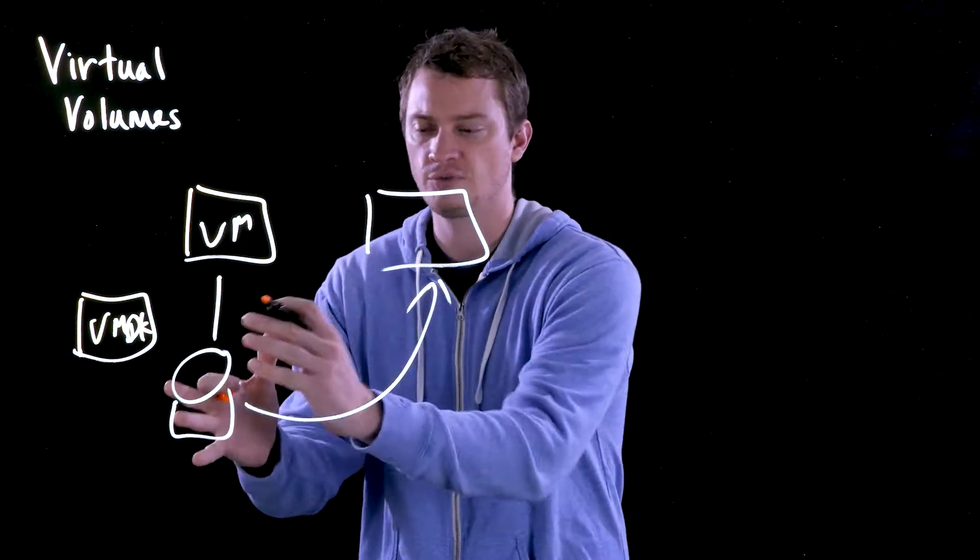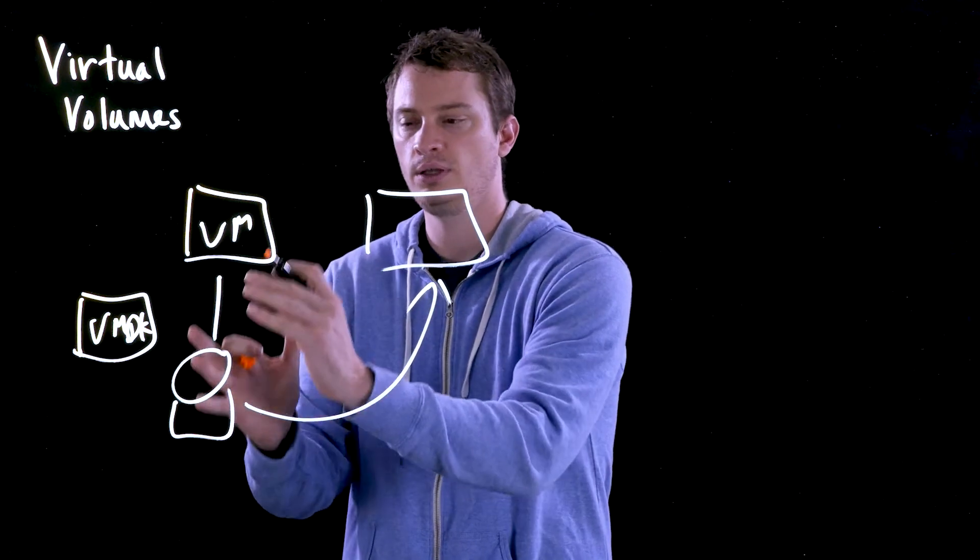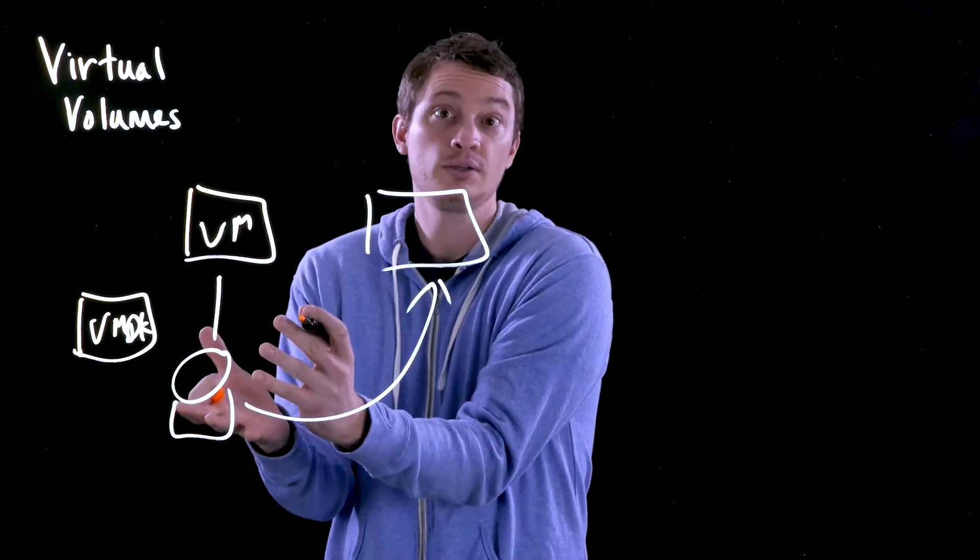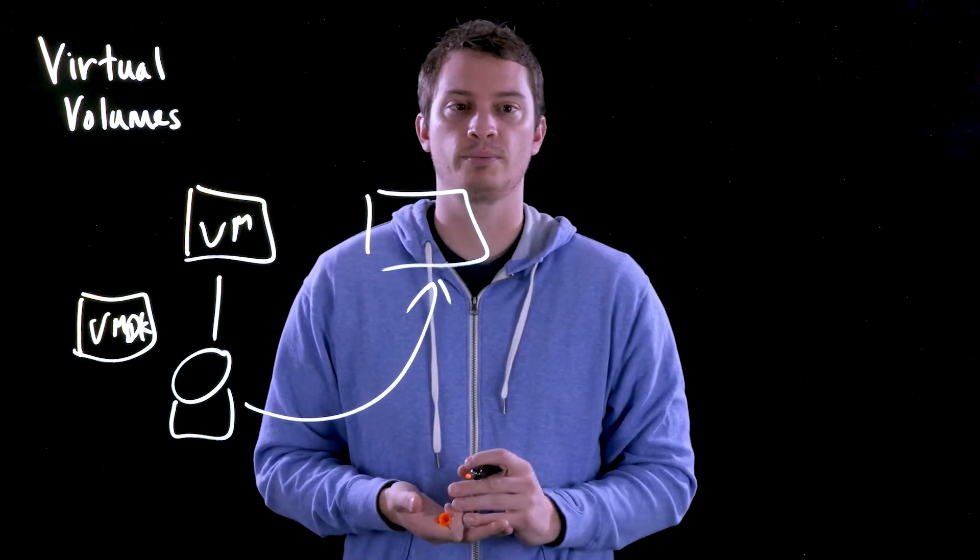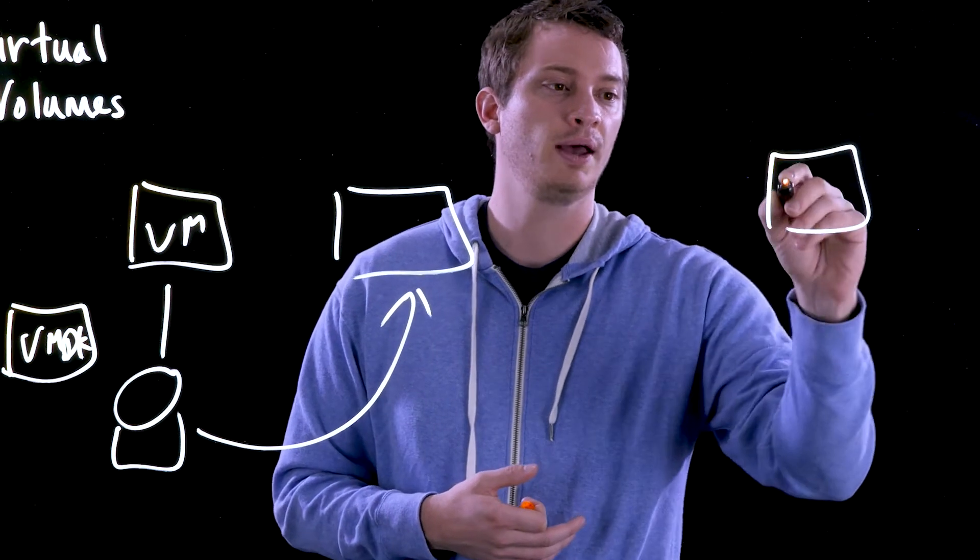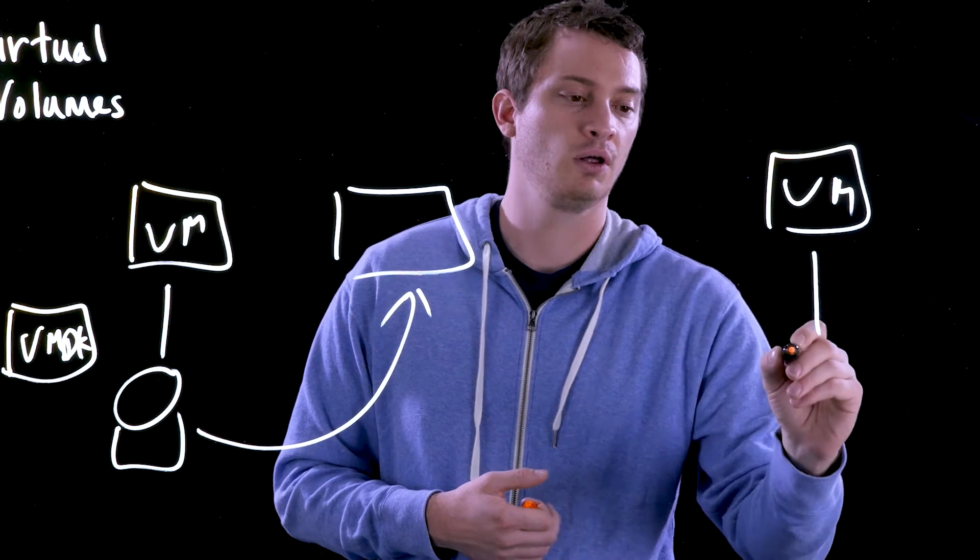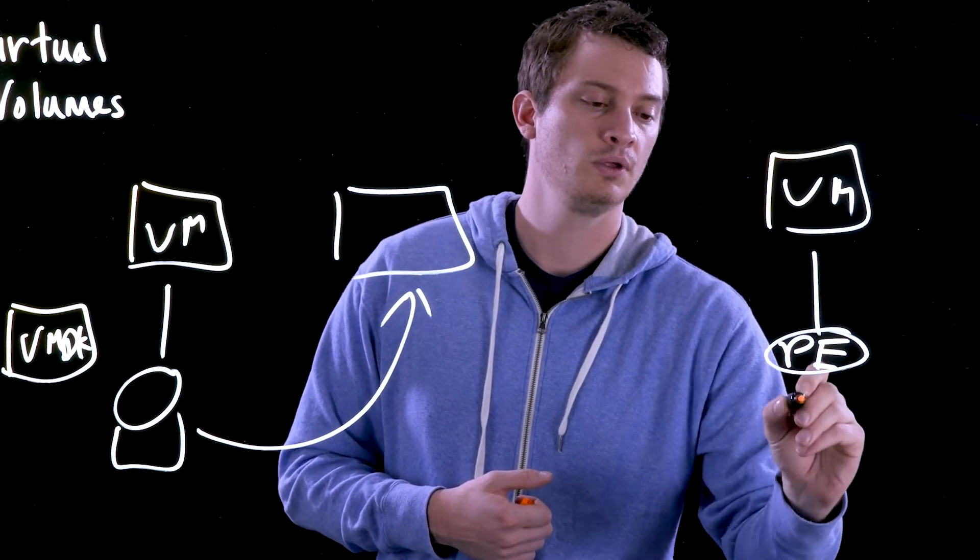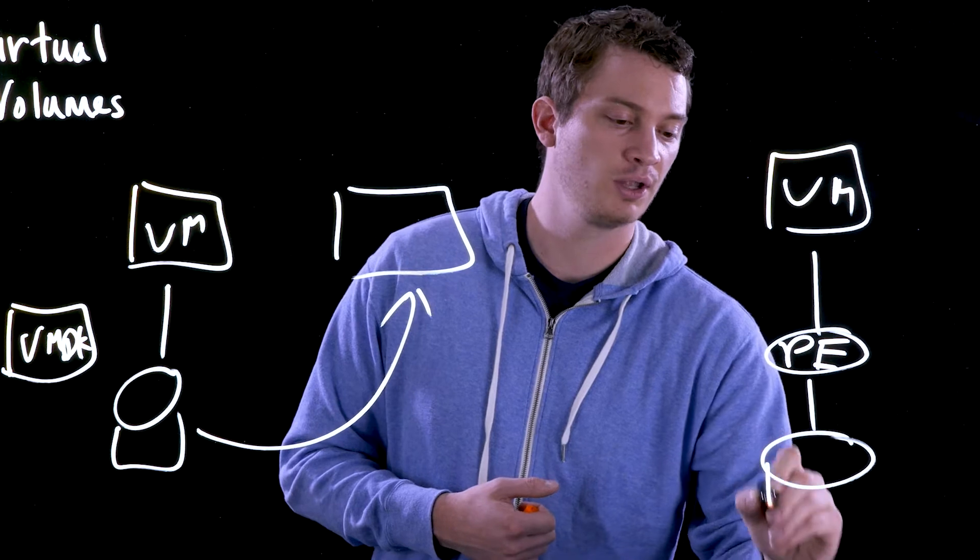But VVols also still offers the data mobility abilities of a raw device mapping. Because when you have a VM and you have your VVol, yes, it goes through PE. But in reality, it's still just a volume on the array.